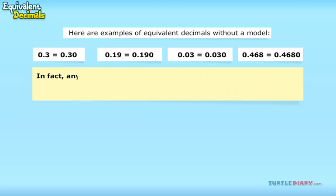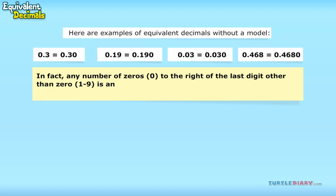In fact, any number of zeros to the right of the last digit other than 0, 1 through 9, is an equivalent decimal to the same decimal number without the zeros.